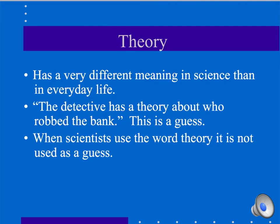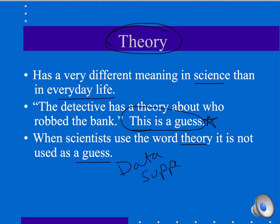We also want to make sure that you know what it means to have a scientific theory. It's very different to have a theory in science than in just everyday life. Here is an example for you. The detective has a theory about who robbed the bank. This is a guess. Until he has something to back up his theory, he really doesn't have a theory. It's really just a guess. When scientists use the word theory, it's not just a guess. It is data supported. There is already backup for the theory.